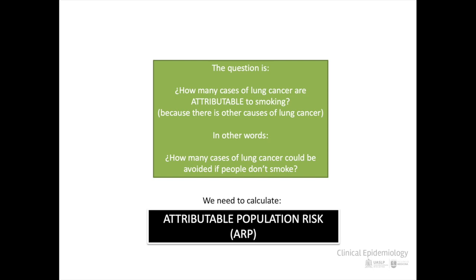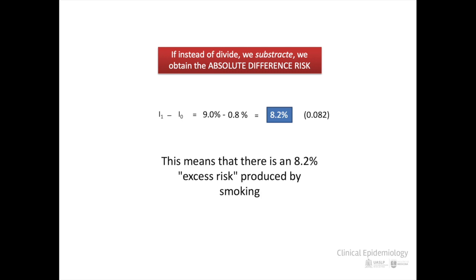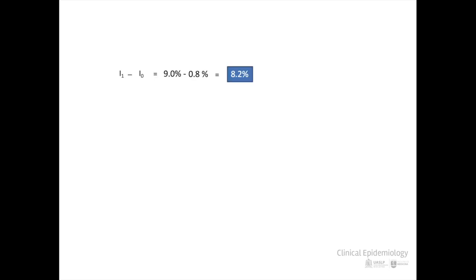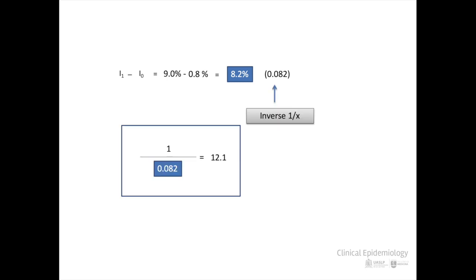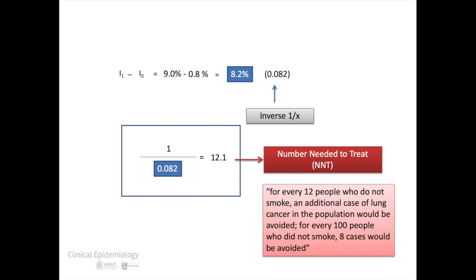This is called the attributable population risk, or APR. The APR takes into account not so much the RR, but the absolute difference in risk. Instead of dividing the incidence of exposed and unexposed populations, a subtraction is made. In this case, the result is 8.2%, or 0.082 measured as probability. This means that there is an 8.2% excess risk produced by smoking. If we calculate the inverse of 0.082, which is 12.1, we obtain a very intuitive measure called number needed to treat, or NNT — interpreted as: for every 12 persons who do not smoke, an additional case of lung cancer in the population would be avoided.